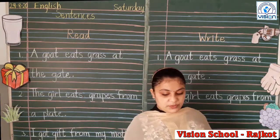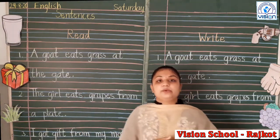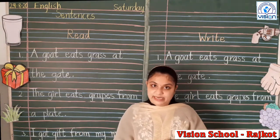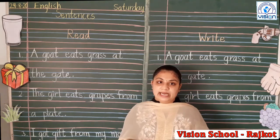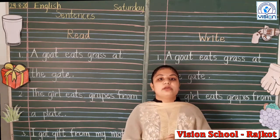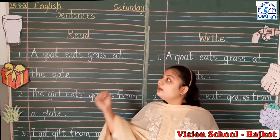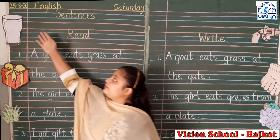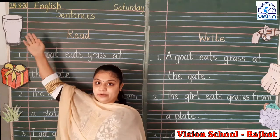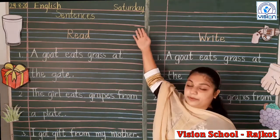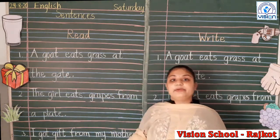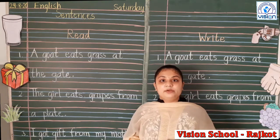First of all, what you have to write? You have to write today's date. Today's date is 29 August 2020. Here, at the right side of the page, at the top, you have to write today's date.